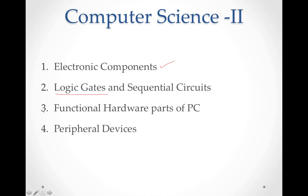The last CS2 chapter is Peripheral Devices — meaning mouse, keyboard, printer, scanner, hard disk, floppy disk, and everything we attach to or use with a PC. All the things we use with a computer are studied in this chapter.